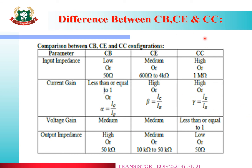The difference between CB, CE, and CC is a common exam question. For Common Base, the current gain alpha equals IC over IE. For Common Emitter, the current gain beta equals IC over IB. For Common Collector, the current gain gamma equals IE over IB. Voltage gain: Common Base is medium, Common Emitter is medium, Common Collector is less than or equal to 1. Input impedance for Common Collector is high and output impedance is low.